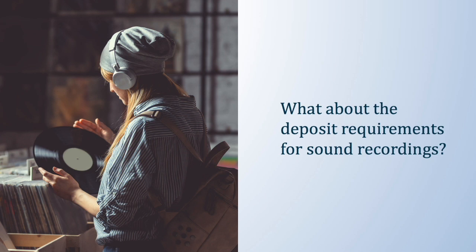The deposit requirements for sound recordings vary depending on whether the album was distributed in a physical or a digital format. If the album was distributed in the United States in a physical format such as a CD or LP, you must submit two physical copies of the best edition of the entire album, including any printed or visually perceptible material distributed with the album, such as artwork, photos, or liner notes appearing on the album cover. By contrast, if the album was distributed solely in a digital format, you may upload a digital copy of each sound recording that you want to register, and you may also upload a digital copy of any photos, artwork, or liner notes included in your claim.